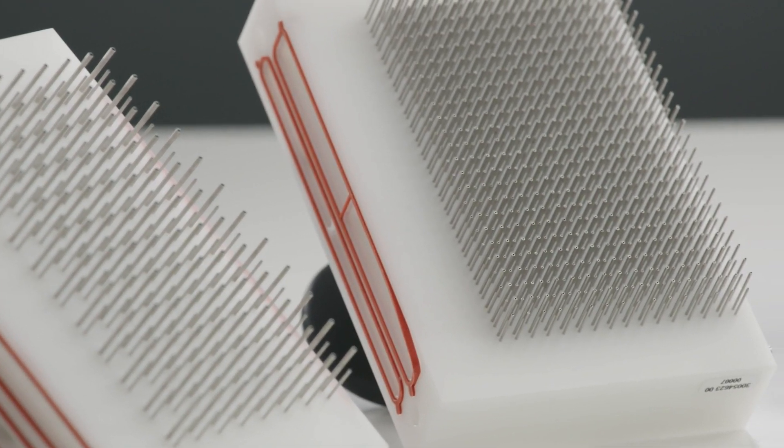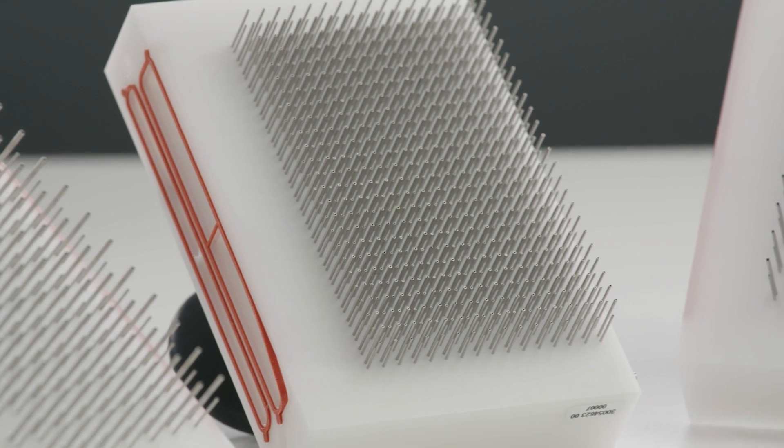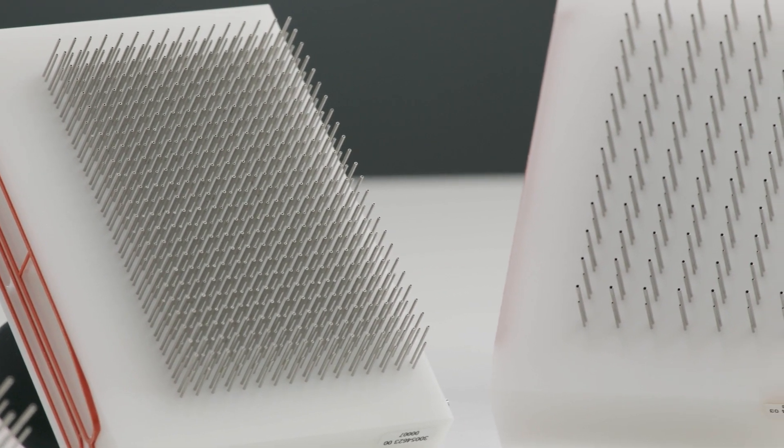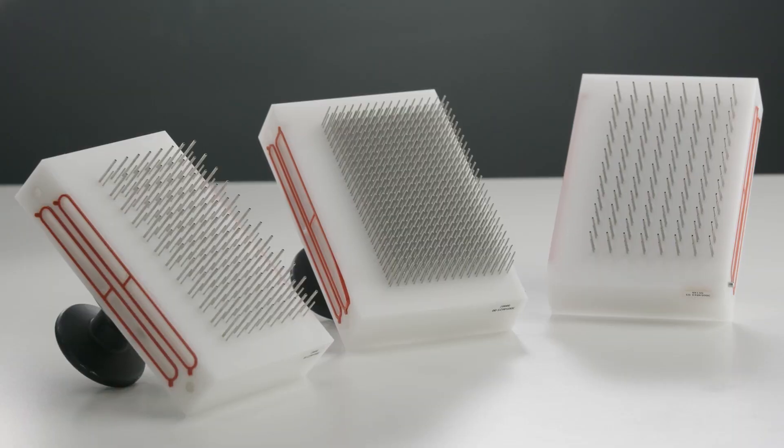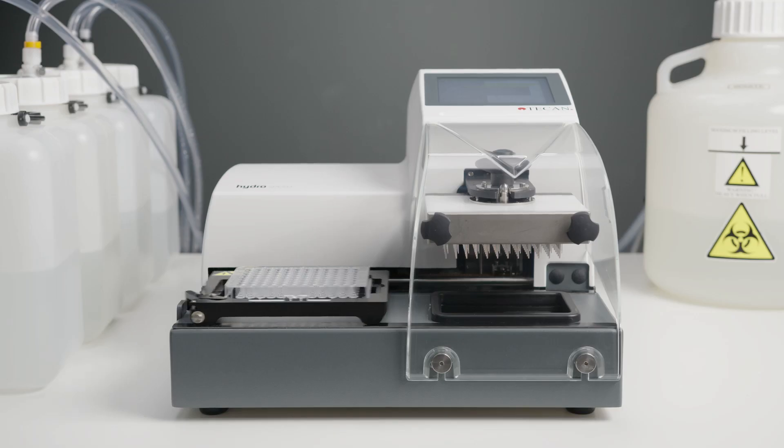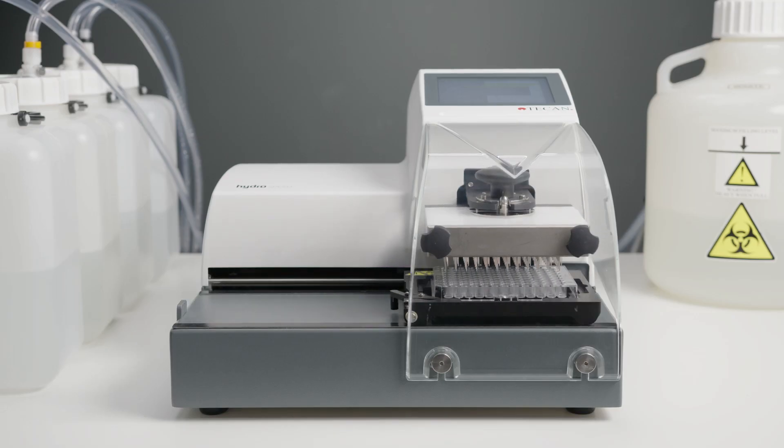The HydroSpeed can be equipped with a 96 or 384 well wash head configuration to process the microplates used in your lab. Plate offsets are the needle positions for the aspirate, dispense and wash steps. Optimization is essential for successful performance of the instrument.